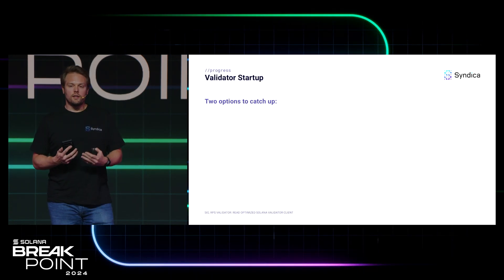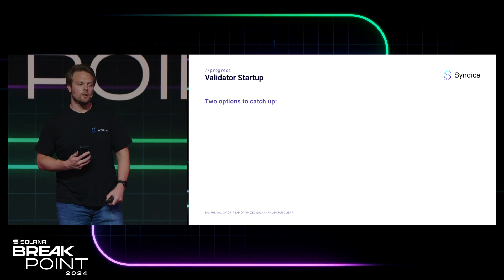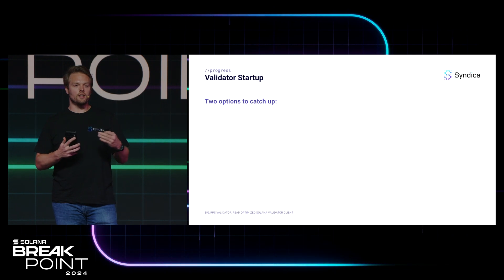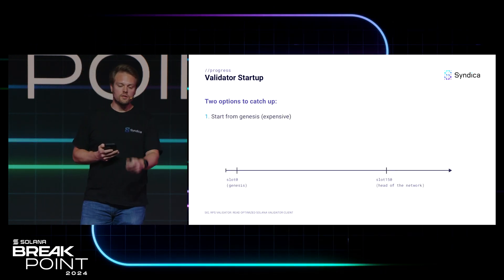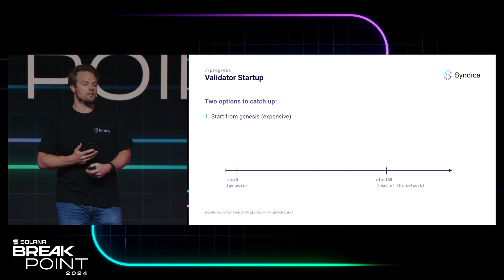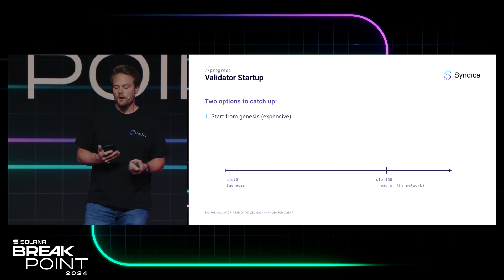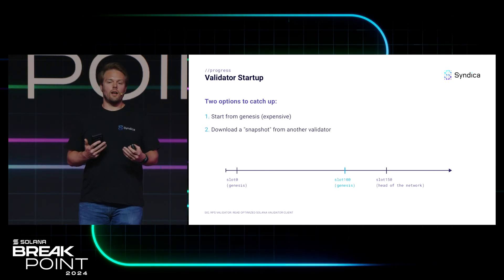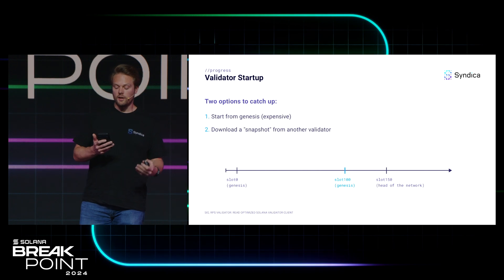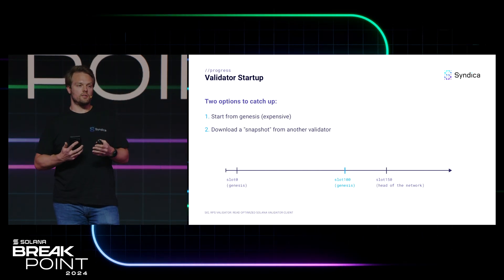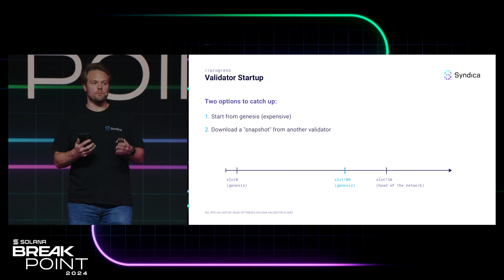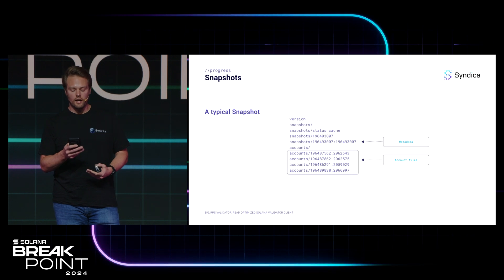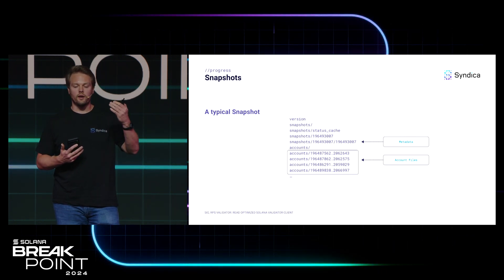Every single Solana validator needs to have a complete copy of AccountsDB, including every single account that's on-chain. The first time a validator starts up, it needs some way to construct this gigantic database. Instead of starting from an empty database and rerunning every transaction ever — which would take a ridiculous amount of time — a Solana validator will download a snapshot from another validator on the network and only process transactions that have occurred since that snapshot. Inside a snapshot, the majority of files are storing all of the accounts, ordered by the time they were modified.